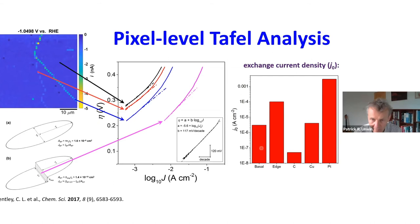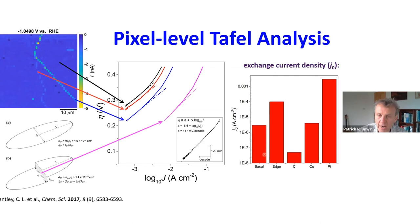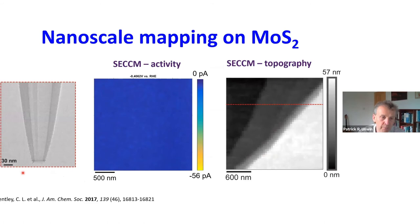We can benchmark these particular features against other materials. The data in the literature, measured on a macroscopic scale where it's difficult to determine material structure, show a really wide variety of exchange current densities. Here we can precisely know what the material is. A follow-up paper from Cameron showed that 30-nanometer probes can be used very easily, and with SECCM you always get synchronous topography and activity — you get the topography for free.